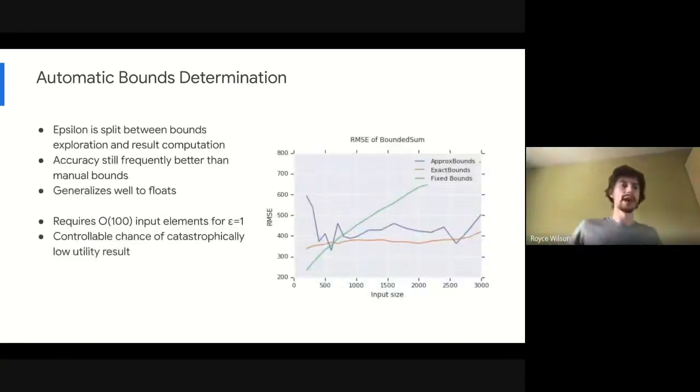But importantly, we'll note that we have to split epsilon when determining automatic bounds between the automatic bounds determination and the actual function computation. So this has an accuracy hit. But automatic bounds, we found, is still more accurate than manually set bounds. It's very difficult to set good bounds by default and generally automatically inferring them results in better accuracy overall. There are some downsides. We need quite a bit of input elements for this to be useful on the order of a few hundred. And there is this related to this threshold that we're clearing that can cause this catastrophic utility failure where the amount of noise added to the logarithmic histogram bins is greater than the threshold. And you get a garbage result out. But this is controllable and it's a pretty low failure probability. We were using in our testing a value of one in a billion and we never encountered it. And it didn't result in a very high threshold to clear. But this is controllable based on your use case. The default parameters that we were using seem to work very well though.